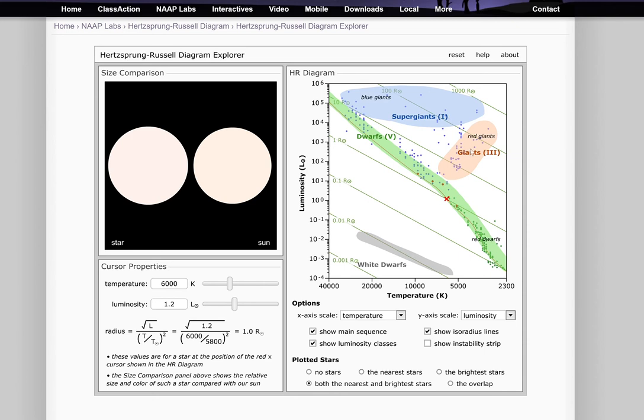Stars that are not on the main sequence up here are not fusing hydrogen into helium anymore. They have run out of enough hydrogen in their core to keep a sustained hydrogen fusion reaction going. So what happens is they start fusing helium into bigger elements, and what that does is that makes them a lot bigger.